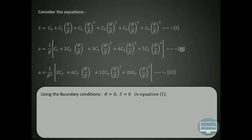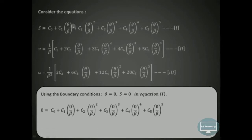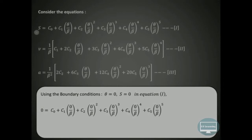Boundary condition 1: theta = 0, S = 0. Substituting into equation 1, all terms containing theta vanish, leaving C0 = 0. Boundary condition 2: theta = 0, V = 0. Substituting into equation 2, all theta terms vanish, leaving (1/β)·C1 = 0, so C1 = 0.